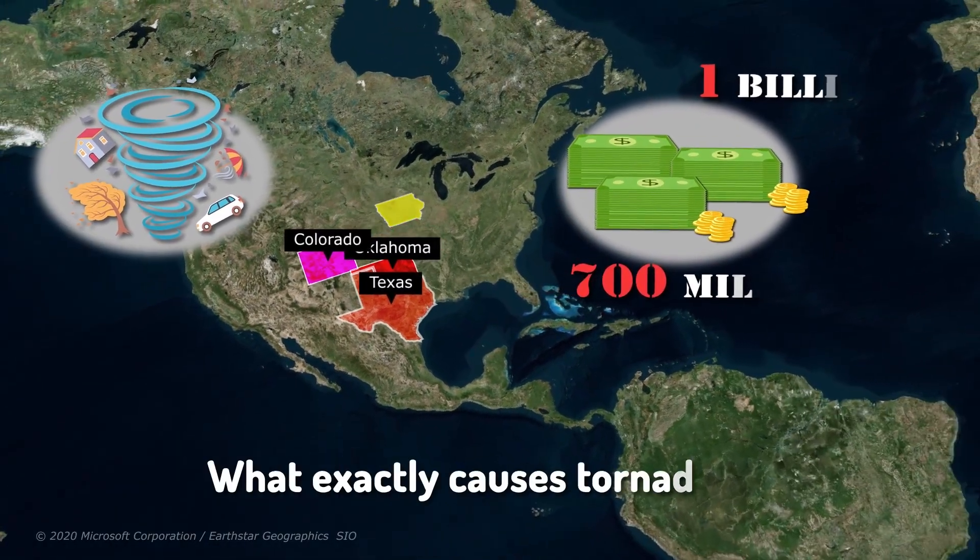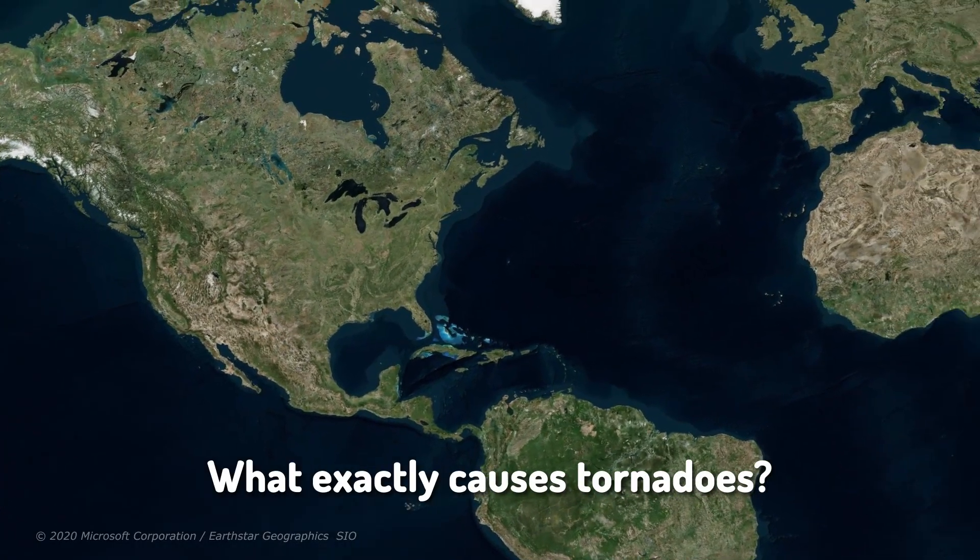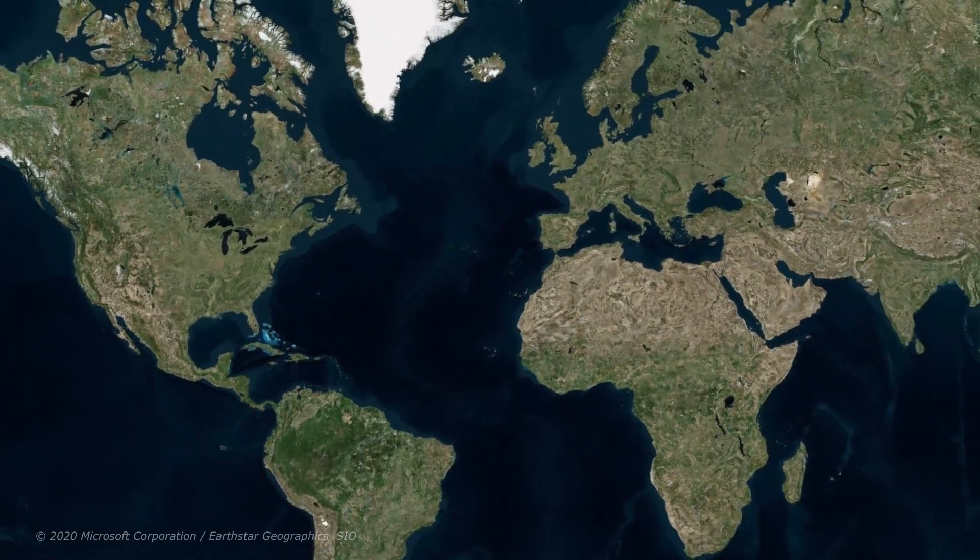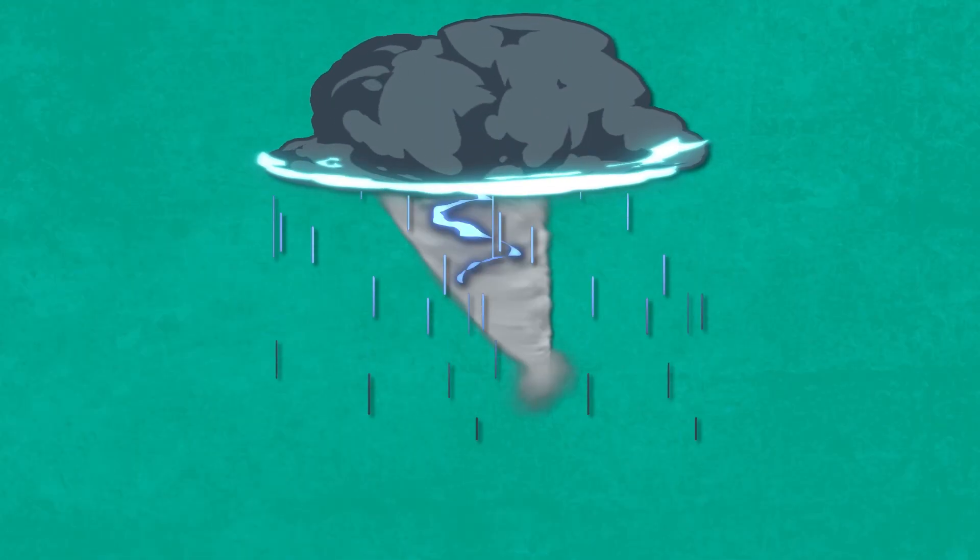So what exactly causes tornadoes? Well, it requires a very specific pattern of weather conditions for them to occur. As mentioned earlier, tornadoes are essentially vertical spiraling wind funnels that are brought on by heavy thunderstorms. So here's how it works.